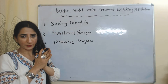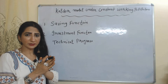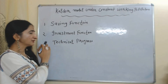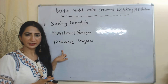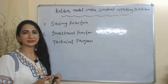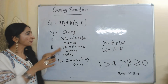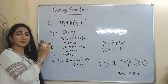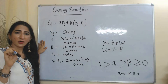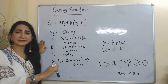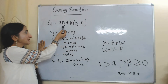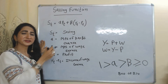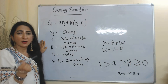Under constant working population, Kaldor talks about three types of functions: a saving function, an investment function, and a technical progress function. We will discuss each one by one. In the saving function equation, ST represents saving at time period t, or current saving. PT represents profit at time period t.